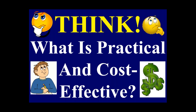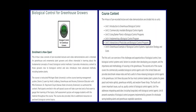Think about what is practical and cost effective. For those wanting more information, Heidi Lindberg and I developed an online course called 'Biological Control for Greenhouse Growers' through Michigan State University Extension. It involves six units — Unit Five discusses interactions with pesticides and biological control. It's four hours of pre-recorded lectures, includes a quiz, and you receive a certificate. Search 'biological control for greenhouse growers' on Google to access the registration website.